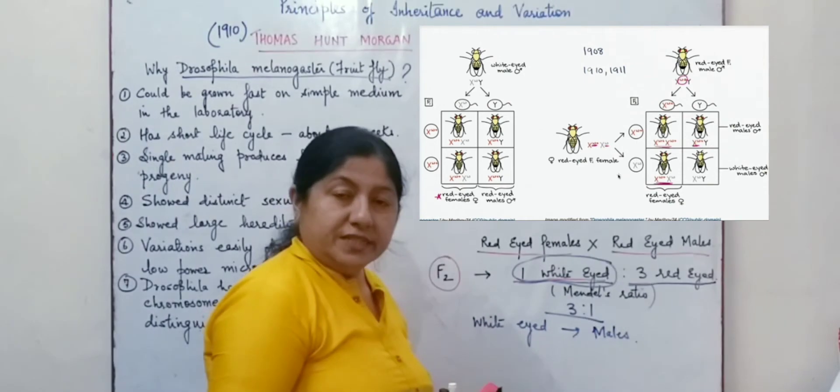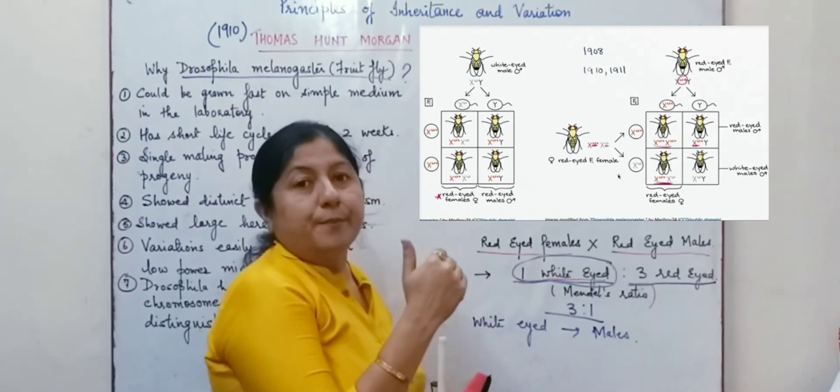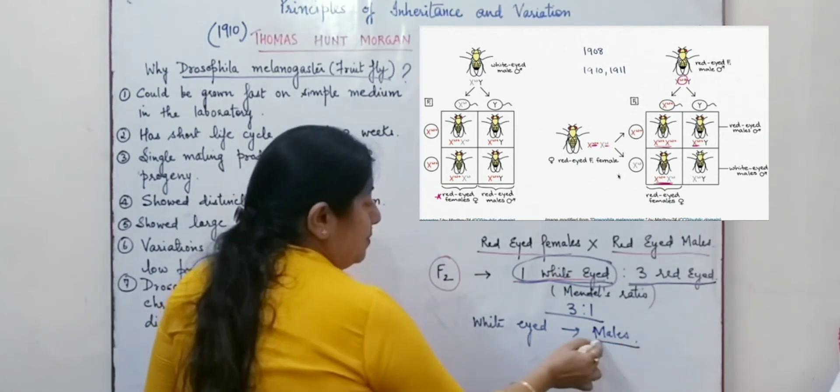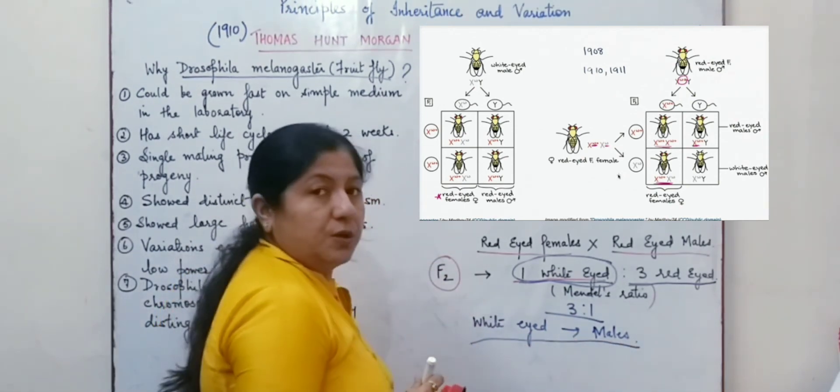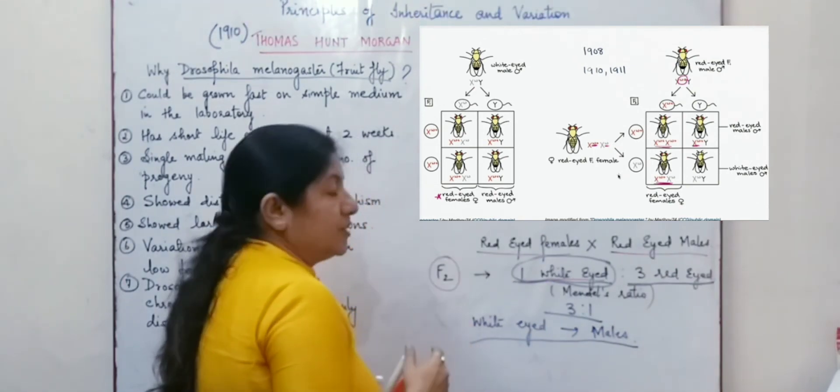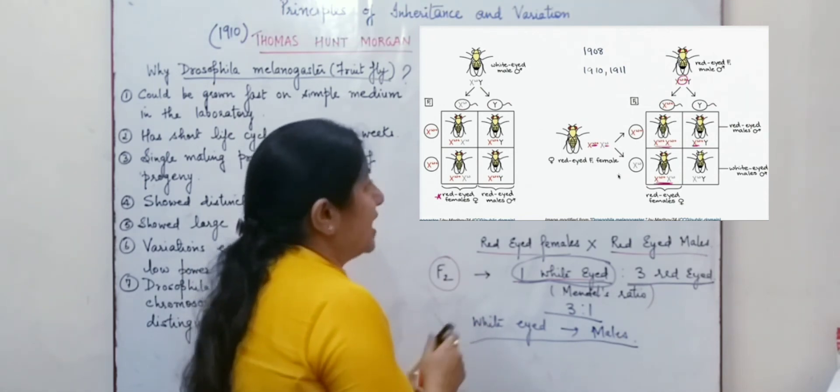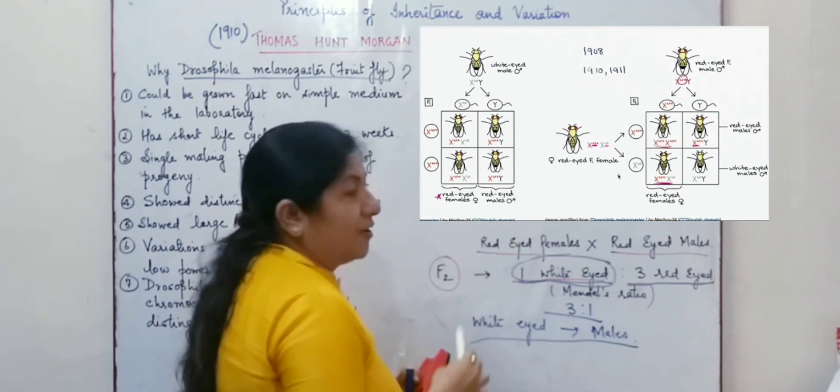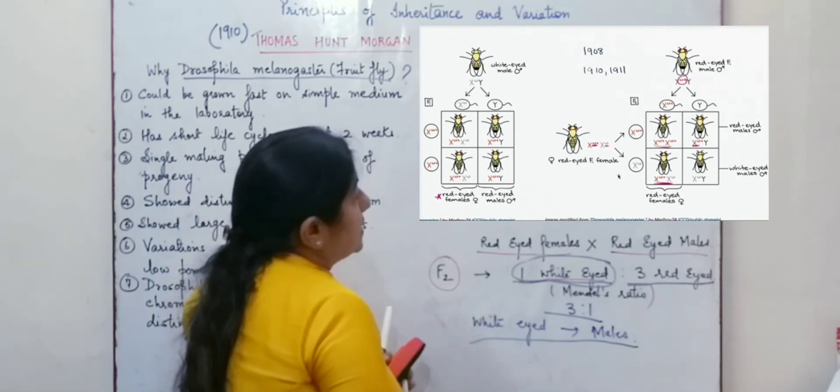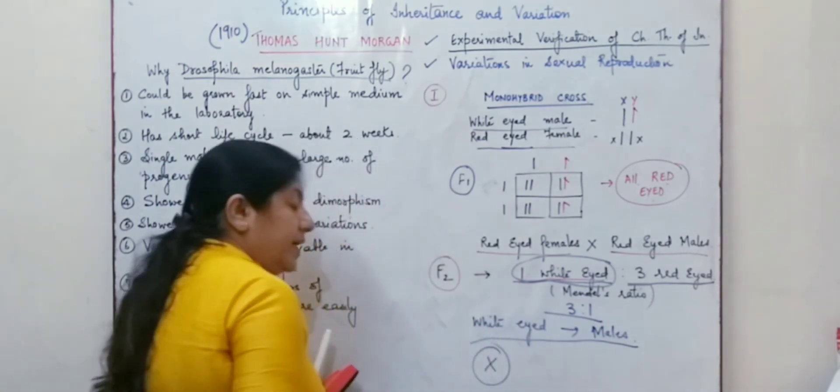Now this did not match with what Mendel had proposed. So there was some sort of variation being introduced and according to Morgan, hypothetically, he suggested that the color of the eye or the gene which is responsible for the color of the eye is located on X chromosome.